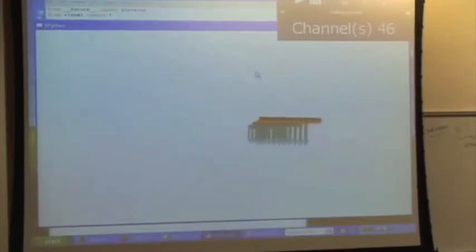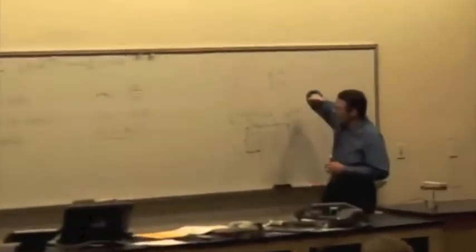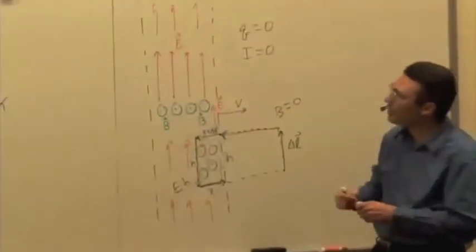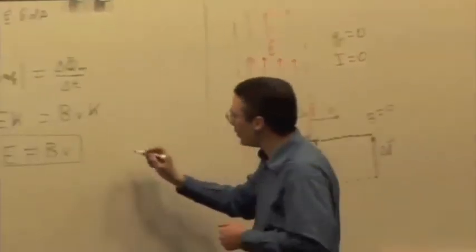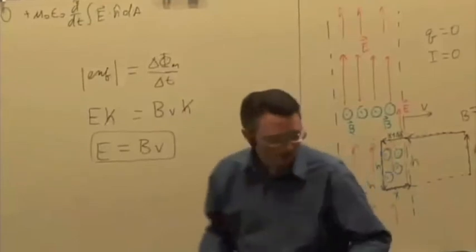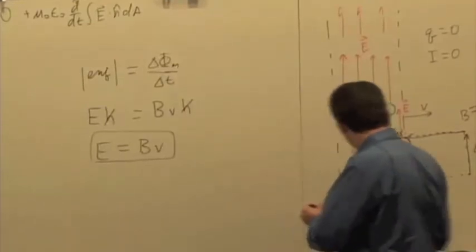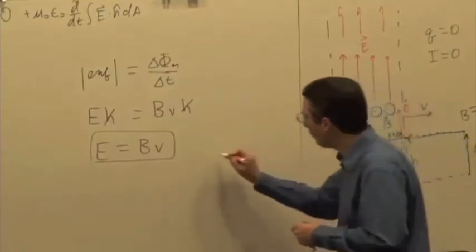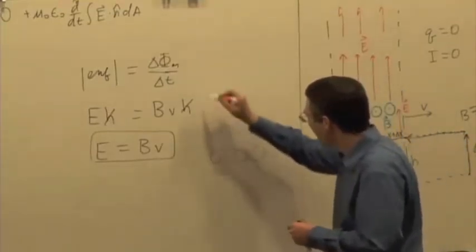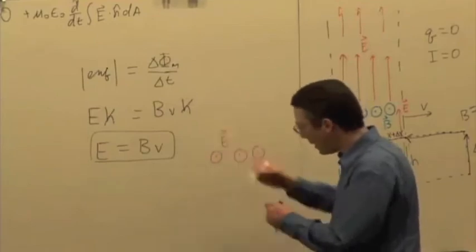Imagine instead choosing a loop that's oriented in this plane, in the plane perpendicular to the board here. If I just rotate the picture and draw E pointing out and B pointing down,